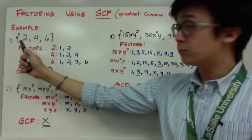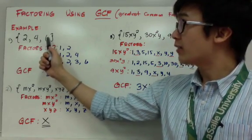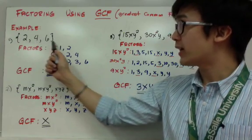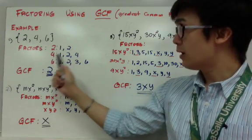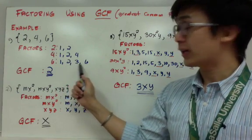So I have the first set of numbers: 2, 4, and 6. If I'm going to list all the factors of 2, 4, and 6, for 2 I have 1, 2; for 4 I have 1, 2, and 4; and for 6 I have factors 1, 2, 3, and 6.